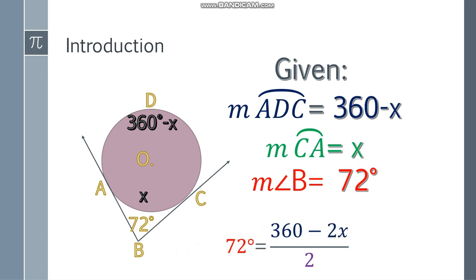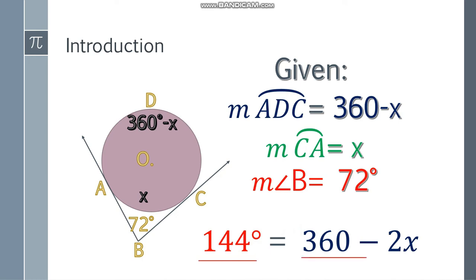Now, we can solve this algebraically. Multiply both sides by two, and you will get an answer of 144 at the left side of the equation. And there will be no fractions anymore. We have 360 degrees minus 2x at the right side.